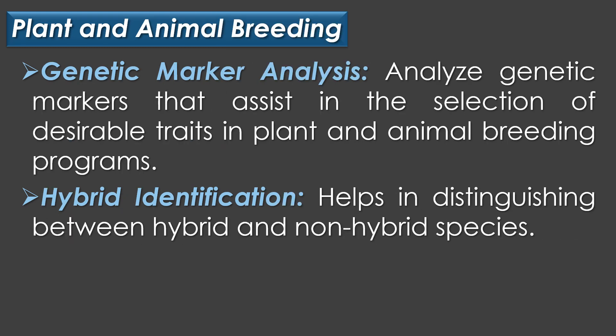In plant and animal breeding, electrophoresis is very helpful for genetic marker analysis and hybrid identification. In genetic marker analysis, electrophoresis is used to analyze genetic markers that assist in the selection of desirable traits in plant and animal breeding programs. In hybrid identification, electrophoresis helps in distinguishing between hybrid and non-hybrid species.